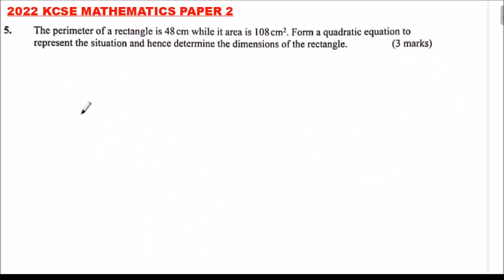This is question number 5, 2022 KCSE Mathematics Paper 2. We are told the perimeter of a rectangle is 48 cm while its area is 108 cm². Form a quadratic equation to represent the situation and hence determine the dimensions of the rectangle. So we can draw a sketch of a rectangle here.